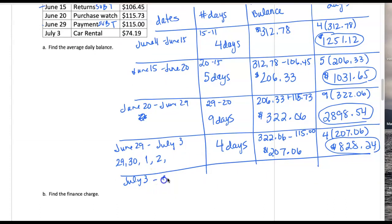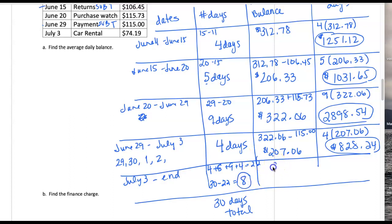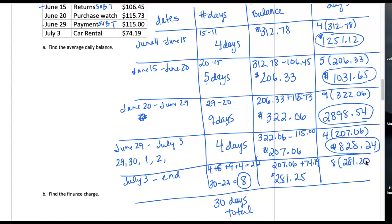This last category goes from July 3rd to July 11th. We should have 30 days total for the billing period. Going back: four days plus five days plus nine days plus four days equals 22 days used so far. Since there are 30 days in the month and we've used 22, there are eight left in this category. For those eight days we have a car rental, so we add $74.19 to our balance for a new balance of $281.25. For eight days at that balance, the sum is $2,250.00.